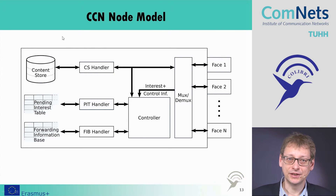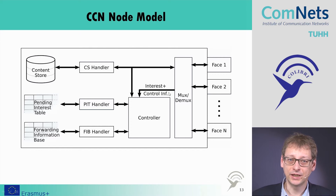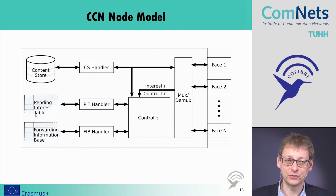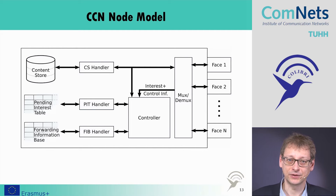Inside a CCN node, we have different devices. We have interfaces called faces, which connect to different routers or network elements. We have a controller and a content store, which is our cache. When we receive an interest, we put it into the pending interest table, which tracks where to forward the data once it arrives. We also have a forwarding information base, which tells us to which face we should forward different content, based on learning or algorithmic strategies defined by the controller.